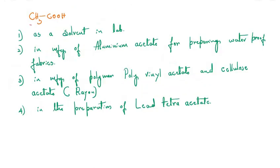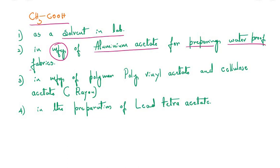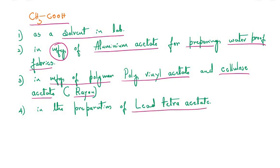Acetic acid is predominantly used as a solvent in the lab, in the manufacture of aluminium acetate (used for preparing waterproof fabrics), in the manufacture of polyvinyl acetate (a plastic) and cellulose acetate — commercially known as rayon or artificial silk — and in the preparation of lead tetraacetate, which is used as an oxidizing agent.